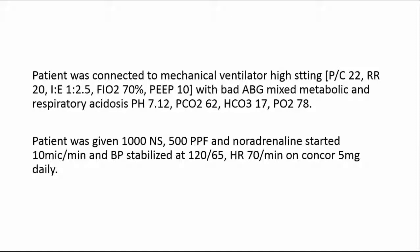The patient was given one liter of normal saline and 500cc of 5% human albumin. Noradrenaline was started at 10 mcg/minute. Blood pressure stabilized at 120/65, heart rate 70 per minute, on Concor 5mg daily.